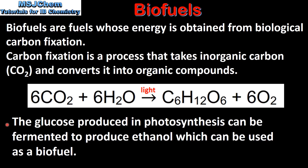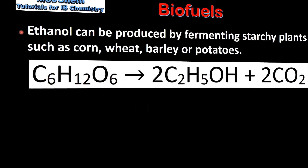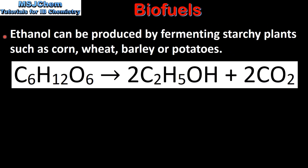The glucose produced in photosynthesis can be fermented to produce ethanol, which can be used as a biofuel. Ethanol can be produced by fermenting starchy plants such as corn, wheat, barley, or potatoes. Here we have the equation for the process in which glucose is fermented to form ethanol and carbon dioxide.